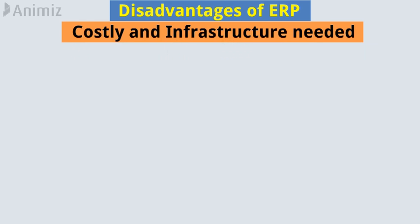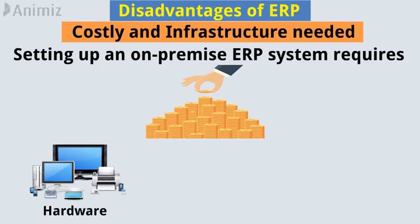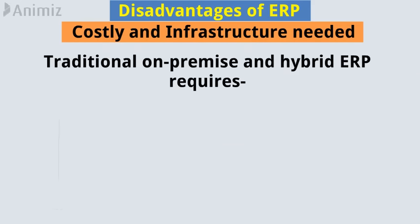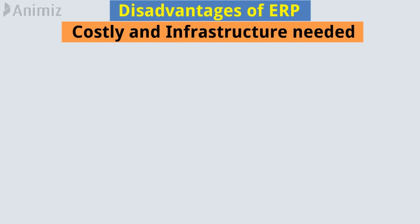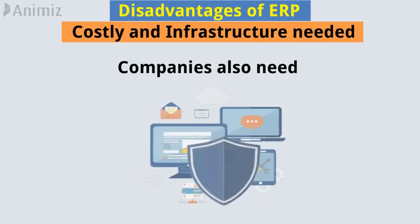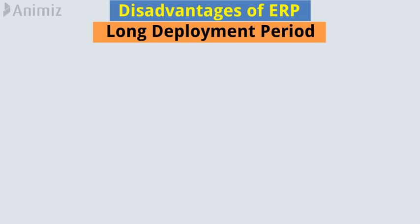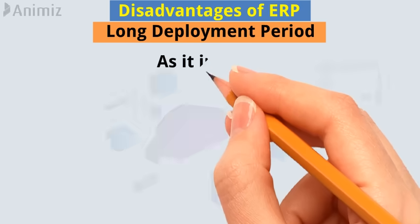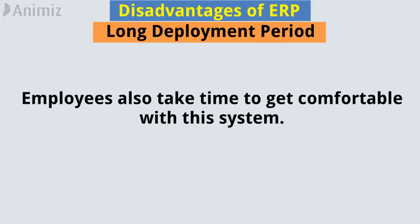Second, costly infrastructure is needed. Setting up an on-premise ERP system requires a huge investment in hardware, software, and its teams. Traditional on-premise and hybrid ERP require on-site servers and networking infrastructure in the company's data center. Servers must be powerful enough to handle huge amounts of data, and companies also need a strong security system to protect all data. The deployment of any ERP system requires a long period of time, as it involves many functions, departments, and changes. Employees also take time to get comfortable with the system.